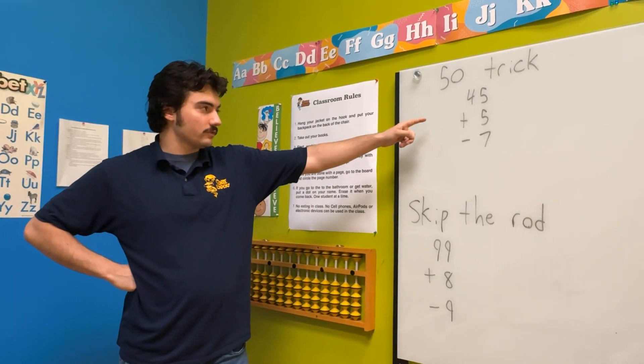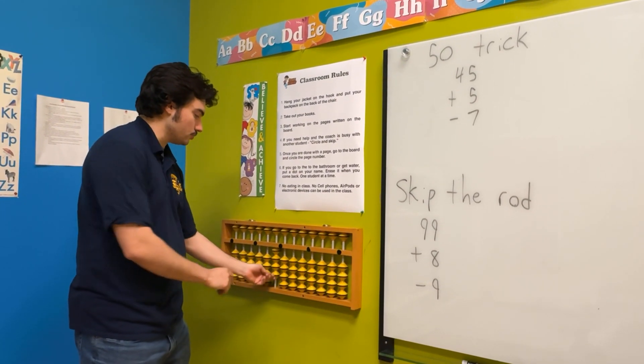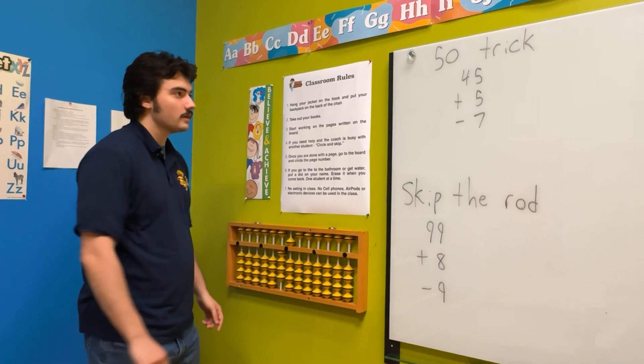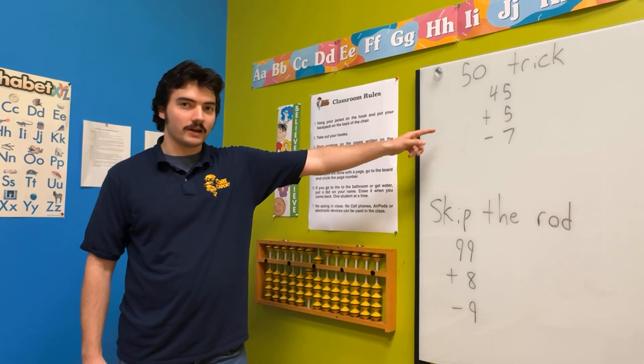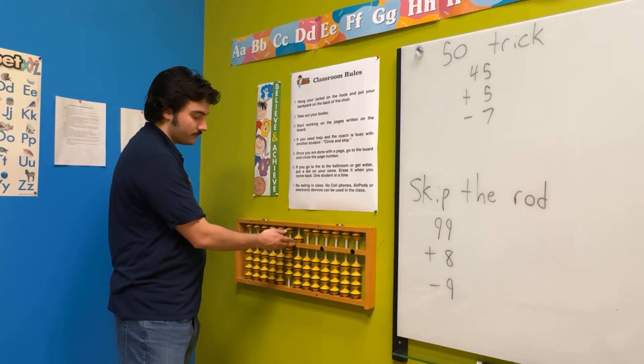We see on the board we have our first problem. So we'll start with 45, using two hands on the abacus. Now we want to add five. If we look at our ones rod, we see we can't add five because it's already there.